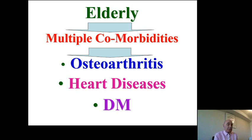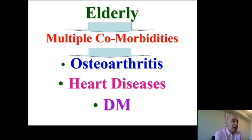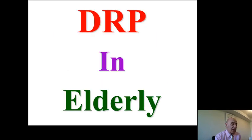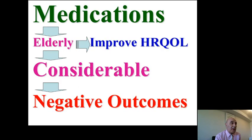In general, elderly patients have multiple comorbidities such as osteoarthritis, heart disease, and diabetes mellitus. The medications used in the elderly are aimed to improve health-related quality of life, but sometimes this can be associated with considerable negative outcomes.